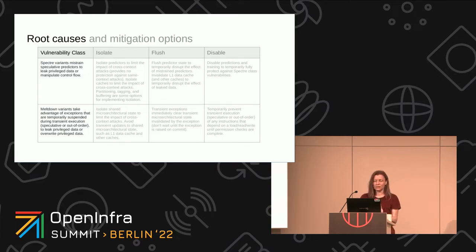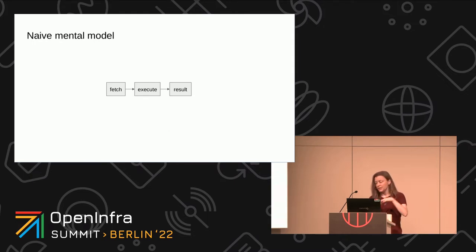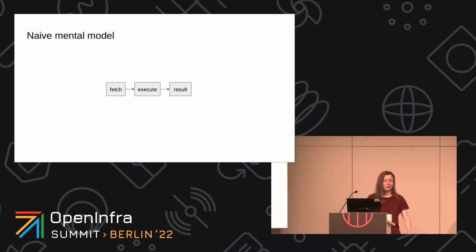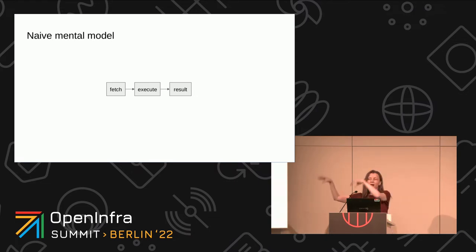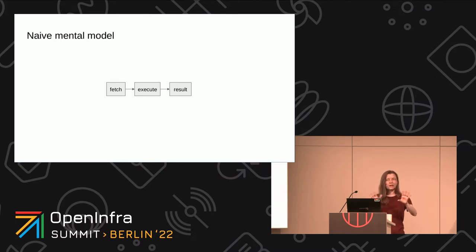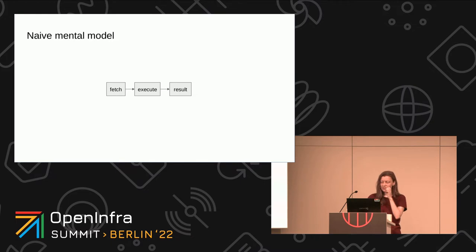The way most of us software developers think about the machine at the very lowest level: we write our code, it translates down to machine code, and then it just goes through — it fetches an instruction, executes it, gives a result. That's not an inaccurate model. It is a very simple model. Here's a little bit more of what's really going on.